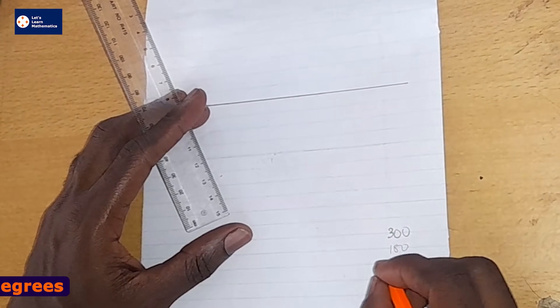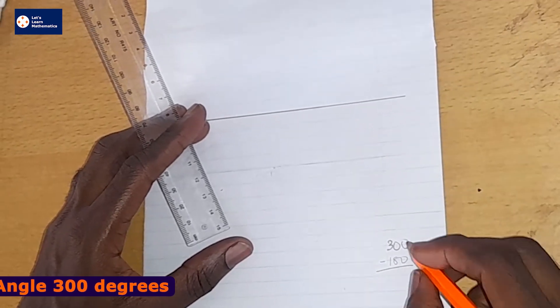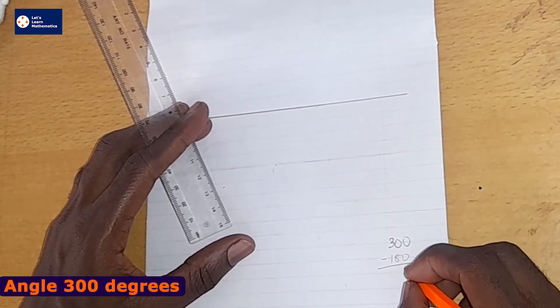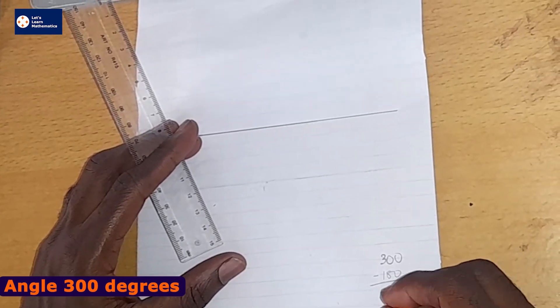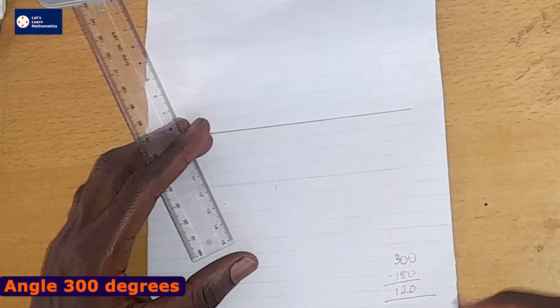So let's do that subtraction. When I subtract 180 from 300, I'm getting 120 degrees.